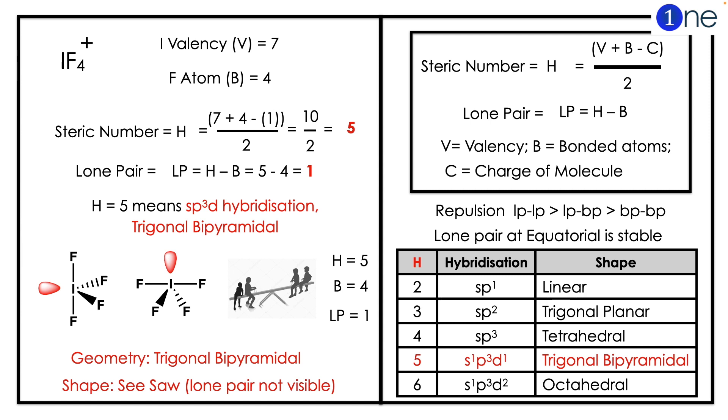You have 10 by 2, which gives 5. So steric number is 5. Lone pair will be H minus B, which is 5 minus 4 equals 1. H equals 5 means sp3d hybridization, which is trigonal bipyramidal structure with one lone pair.